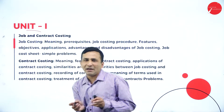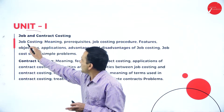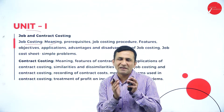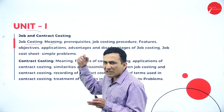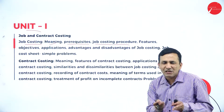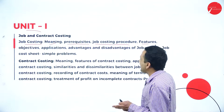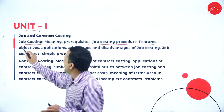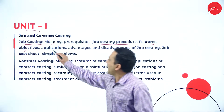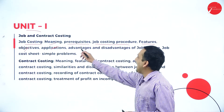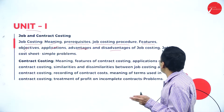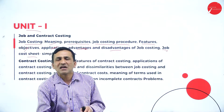Under the first unit, job and contract costing, job costing covers the meaning of a specific job, what responsibilities are performed, prerequisites, job costing procedure, features, objectives, and application — where exactly job costing is used — as well as the advantages and disadvantages of job costing.